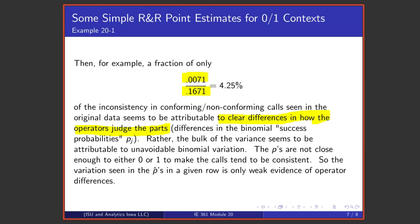One gets binomial variation when one has P's that are not close to being either 0 or 1 to tend to make the calls consistent. So, if we had parts that were clearly conforming or clearly non-conforming, that would tend to make the calls consistent, and that would make the repeatability variance smaller.